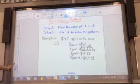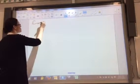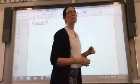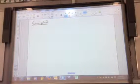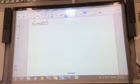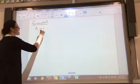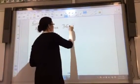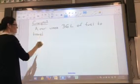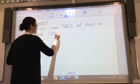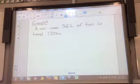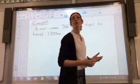The next example. In example two, we're going to look at the unitary method with rates. Now, for rates, remember rates is when we have different units. So, for example, a car uses, let's say, 36 litres of fuel to travel 120 kilometres. So I've told you some information about this car. It uses 36 litres of fuel to travel 120 kilometres. And I want to know how much fuel I need to travel 200 kilometres.